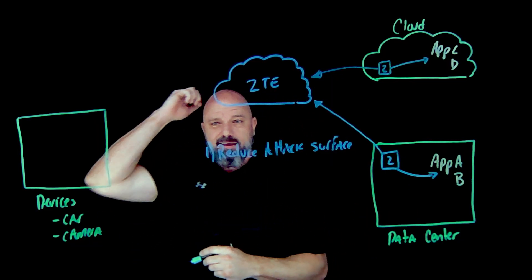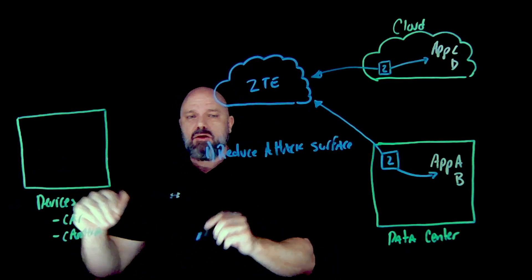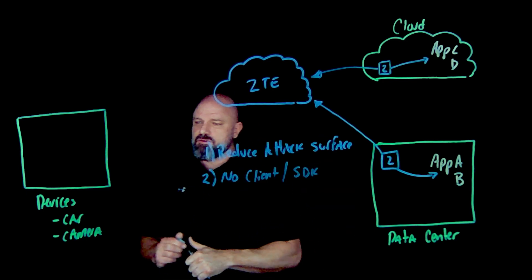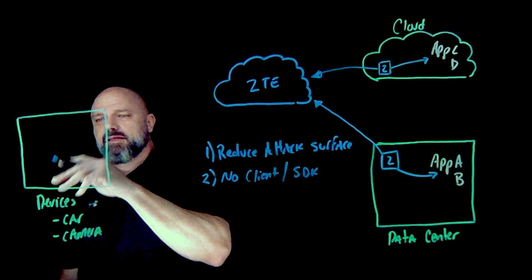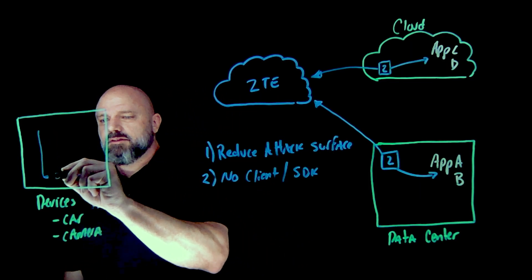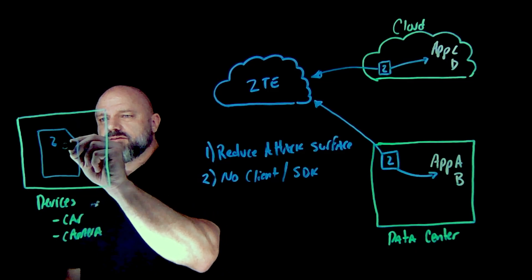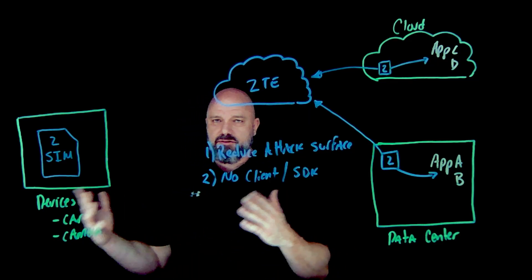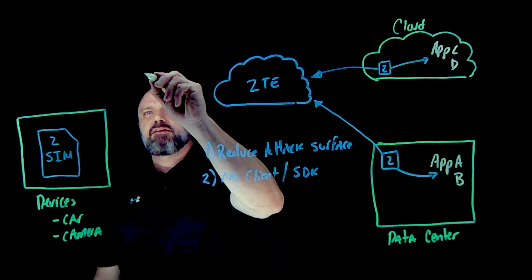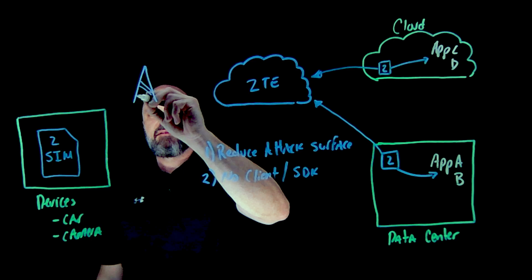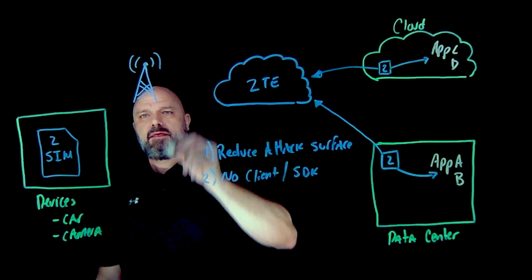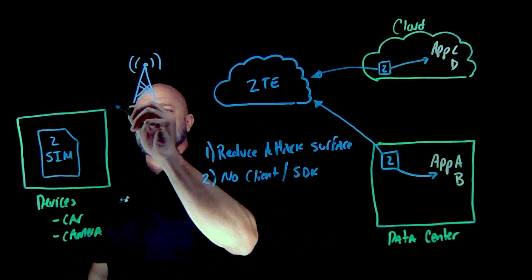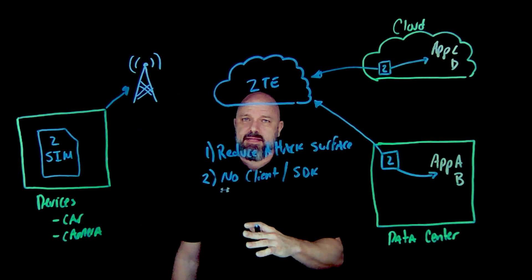Now you might think I'm going to convince you to install a client or an SDK — and the answer is absolutely not. Instead, I'm going to position something different. These devices are internet-connected, and what we have here is the ZScaler cellular SIM. It's available in two flavors: physical SIM or eSIM. There's no client, no SDK — you just plug it in and 100% of the traffic originating from that device goes outbound to the internet.